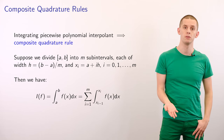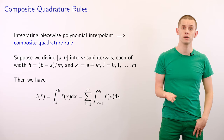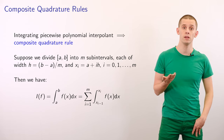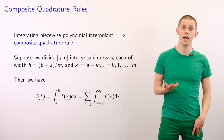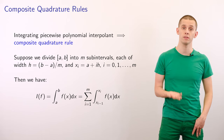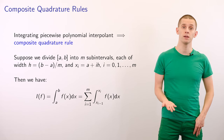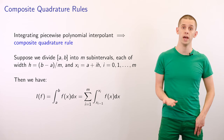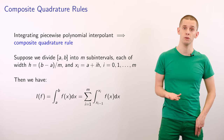If we integrate a piecewise polynomial interpolant, then we get what we refer to as a composite quadrature rule. Suppose we divide our interval from a to b into m equally spaced subintervals. The subinterval width will be given by h, equal to b minus a divided by m, and we define x_i equal to a plus i times h as the position of the ith boundary. Therefore, I of f equals the integral from a to b of f(x) dx, which we break into the sum from i equal 1 to m of the integral from x_{i-1} to x_i of f(x) dx, and we apply our quadrature rule to each component integral.